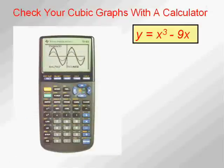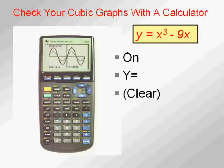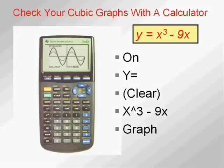Remember how to do that? You turn it on. Hit y equals. And then clear out anything you did before, perhaps, hitting clear button. And then type in whatever the function is. In this case, x to the third minus nine x. And what do you hit? Hit graph and there it is. And you can get out of it by hitting clear.